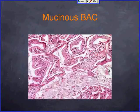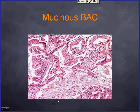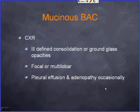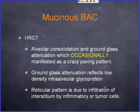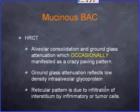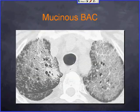Histologically, columnar cells line the alveolar walls with extensive exudates filling the airways. On chest X-ray, you see consolidation or ground glass opacity that can be focal or multilobar. On high-resolution CT, ground glass attenuation is an occasional finding, reflecting low-density mucinous and glycoprotein content. The reticular pattern represents infiltration of the interstitium by inflammatory and tumor cells.